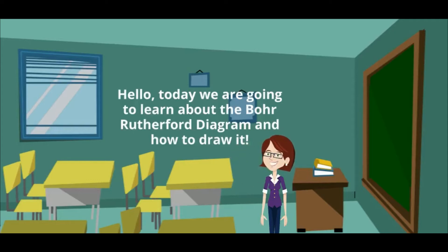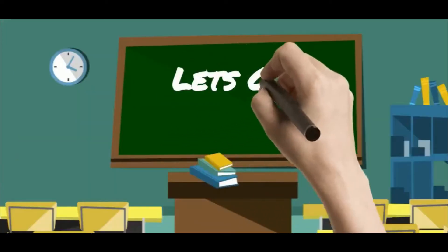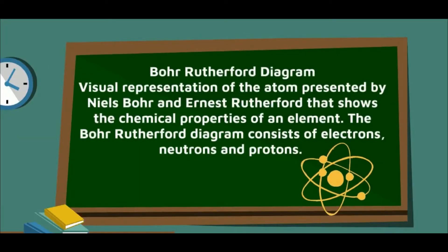Hello, today we're going to learn about the Bohr-Rutherford Diagram and how to draw it. The Bohr-Rutherford Diagram is a visual representation of the atom that consists of electrons, neutrons, and protons.